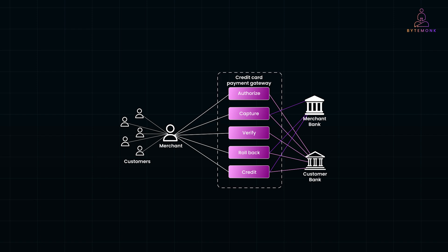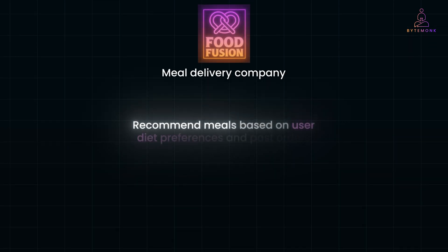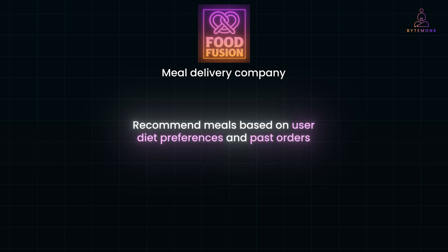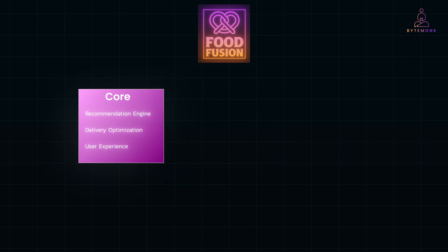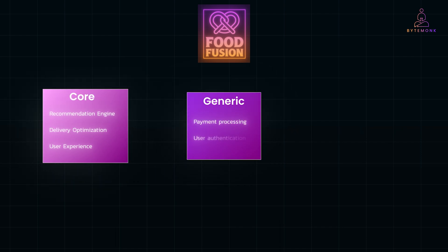Let's bring the concept of subdomains to life with an example. Meet Food Fusion, a meal delivery company that uses a mobile app to recommend meals based on users' diet preferences and past orders, ensuring timely delivery through optimized logistics. The business domain is meal delivery, supported by different types of subdomains. Core subdomains like the recommendation engine, delivery optimization, and user experience are at the heart of Food Fusion's success — personalizing meal suggestions, driving customer satisfaction, building trust, and keeping users engaged.